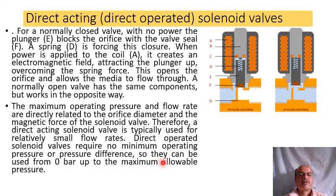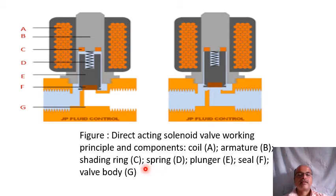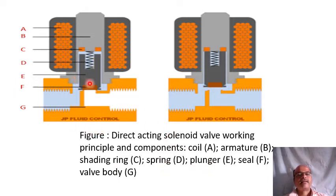Direct operated solenoid valves require no minimum operating pressure or pressure difference, so they can be used from zero bar up to maximum allowable pressure. In the diagram: A is the coil, B is the armature, C is the shading ring, D is the spring, and E is the plunger. Due to generation of the magnetic field, the plunger moves upward or downward as required to keep the valve open or closed.